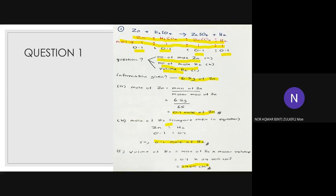For the first step you must find the number of moles by referring to the information given. The information given is 6.5 grams of zinc, so we have mass of zinc and the molar mass of zinc given in the question. So we get 0.1 mol of zinc. Write 0.1 directly here — you already know the exact ratio. When the question asks for the number of moles of H₂, you just compare: you get 0.1 mol of H₂. For the volume, use the formula: mol = volume ÷ molar volume, and you get the answer.